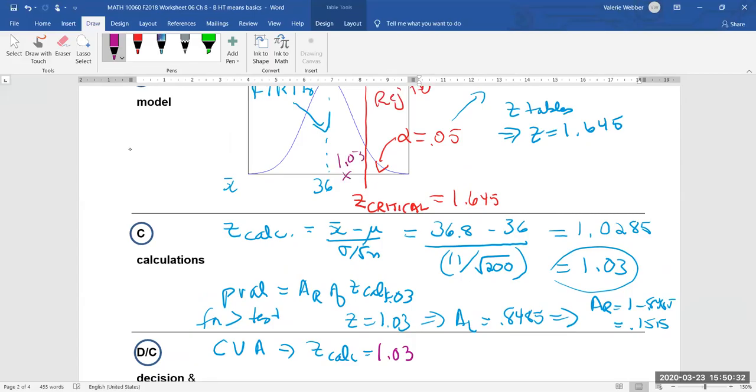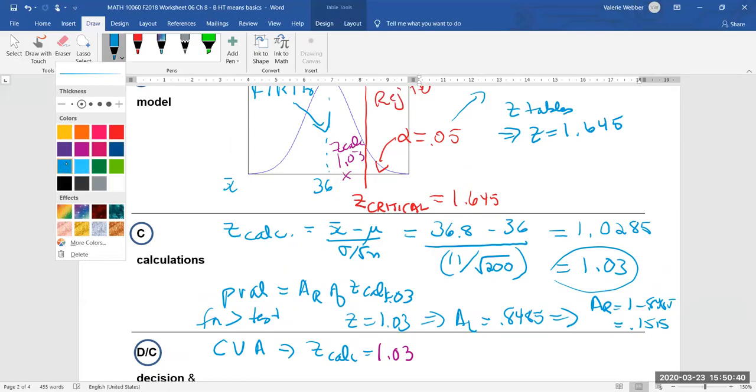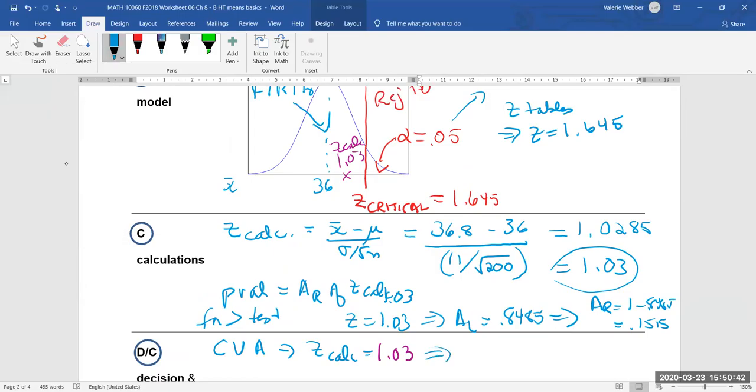1.03 zed calculated. So we can clearly see that that's in the fail to reject region. So fail to reject H naught.